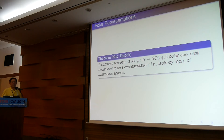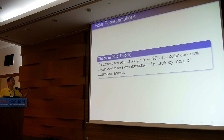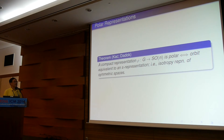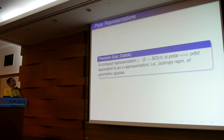A very famous result due to Dadok and Kac says the following: if you have a compact group linear representation — a homomorphism to SO(n) — which is polar, then this representation is always equivalent to the isotropy representation of some symmetric space. For any symmetric space you may have an isotropy representation, and the two sets of representations are exactly equivalent. So you have a complete classification for polar representations by the work of Dadok and Kac.